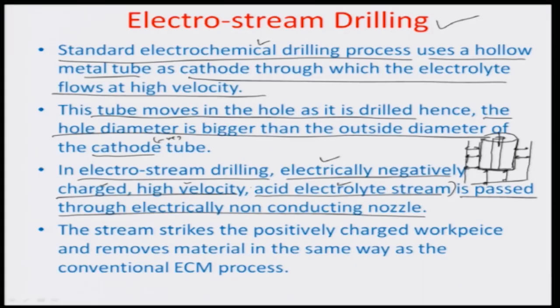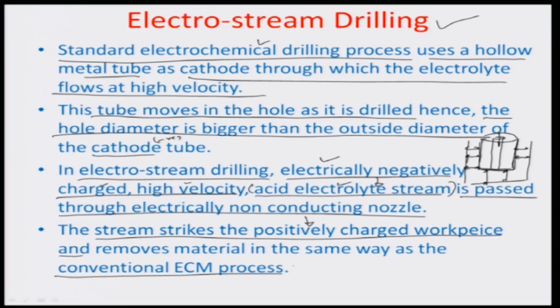It is a sort of liquid electrode, as you can probably envision the process to be. The electrically negatively charged high velocity acid electrolyte is typically thrown as a jet stream onto the surface that you want to machine, and the stream strikes the positively charged workpiece. There is electrochemical dissolution because there is always a potential difference between this negative acid electrolyte stream and the positively charged workpiece, and machining takes place in the same manner as a conventional ECM process, although in this case it is the liquid stream acting as an electrode instead of the tool itself.